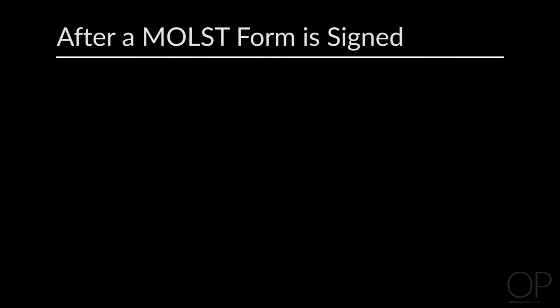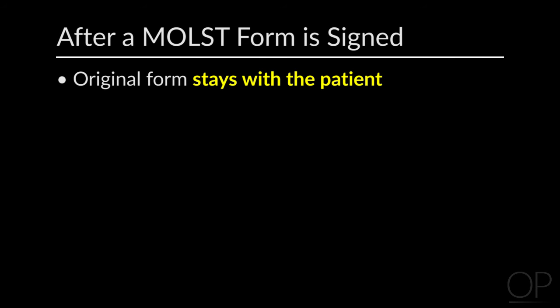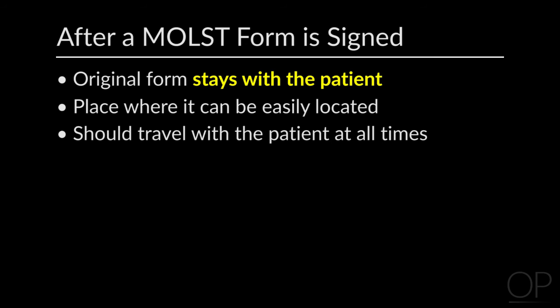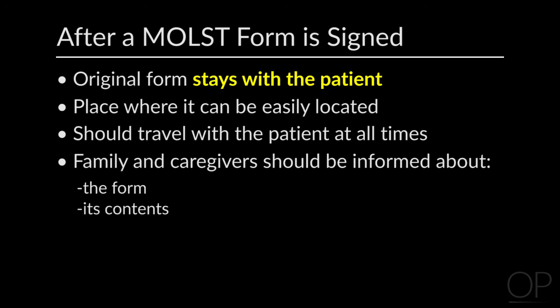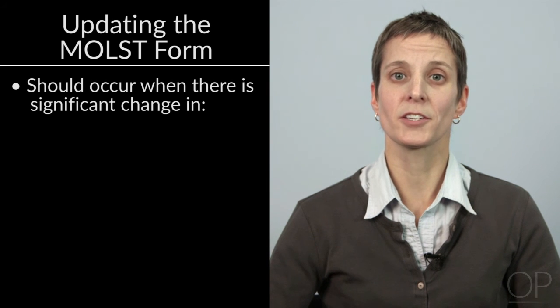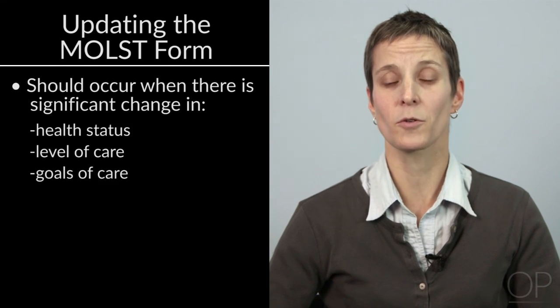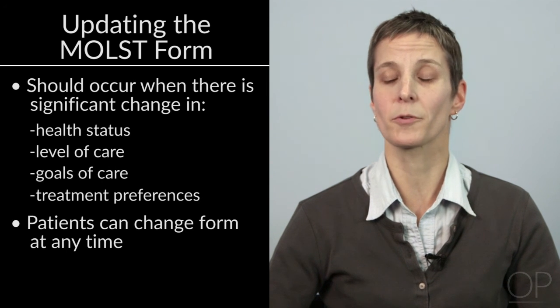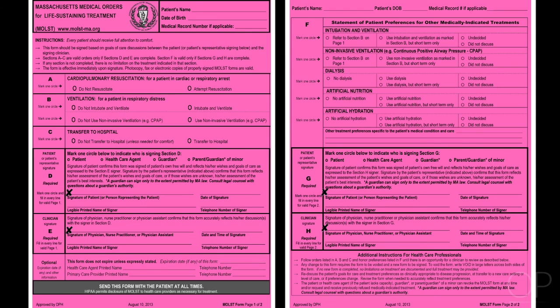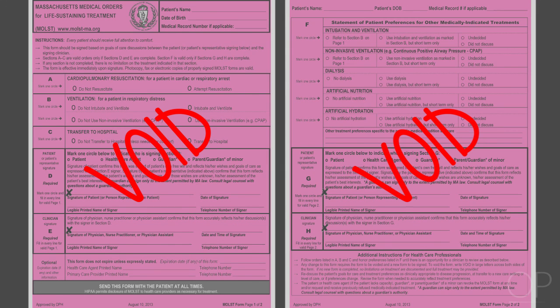Here are some points to remember after a MOLST form is signed. The original MOLST form stays with the patient. The MOLST form should be placed where it can be easily located, such as on the refrigerator or at the bedside. The form should go with the patient to all care settings and during any trips or appointments outside the home. Family and caregivers should be informed about the MOLST form, its contents, and where to find it. Copies of the MOLST form are valid, and all of the patient's health care providers should have an updated copy. MOLST forms should be updated any time there is a significant change in the patient's health status, level of care, goals of care, or treatment preferences, and patients can ask to change or void their MOLST form at any time. Any change to the MOLST form requires the form to be voided and a new form filled out. To void a MOLST form, write void across pages one and two of the form. Instruct the patient that all copies of the outdated form must be destroyed, and create a new MOLST form if the patient desires it.